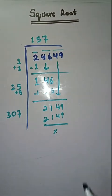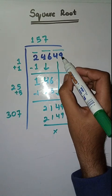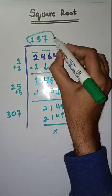So this is completely solved. Square root of 24,649 is 157.